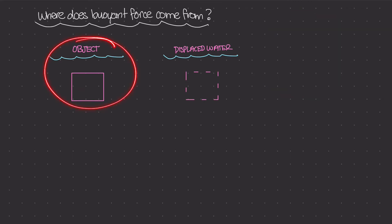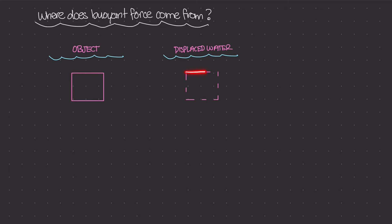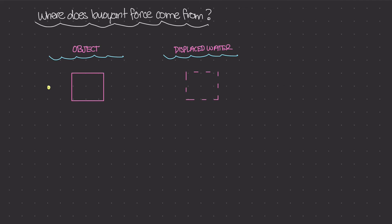I have two diagrams drawn here, on the left and on the right, and they represent the same situation. On the left, we have a body of water with a block fully submerged in the liquid. On the right, I have a dotted outline representing the amount of water that got displaced due to this block — so this volume and that volume are exactly the same. If we draw the free body diagram of the object: at the very bottom we have pressure causing a force F sub bottom, equal to P bottom times A; at the top we have F top equal to P top times A; and we also have the weight of the block, which is mass of the block times gravity.